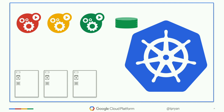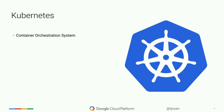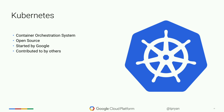Kubernetes comes along and says: you give us some resources and tell us how much of this stuff you want running, and we'll just keep it running for you. If you need to auto-scale, we can do that too. So Kubernetes is a container orchestration system. It is open source, started by Google but now contributed to by many others — key contributors include Red Hat, CoreOS, and Docker.